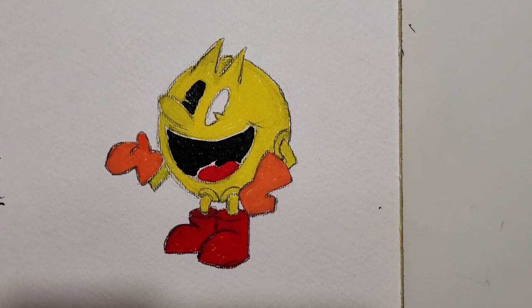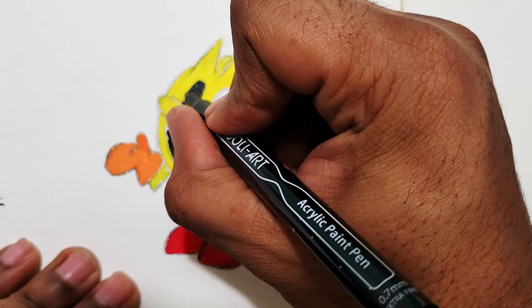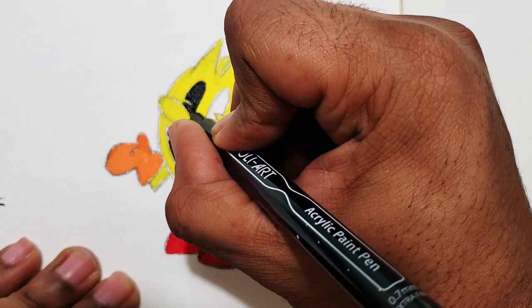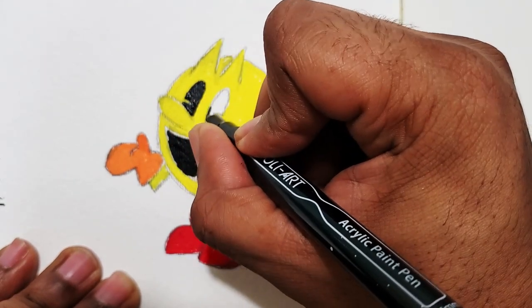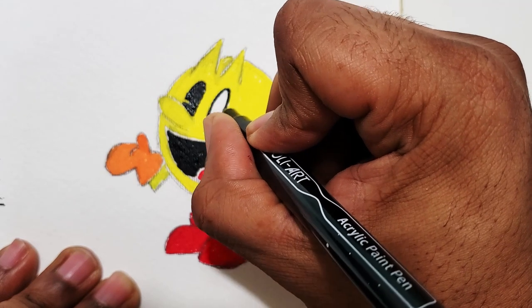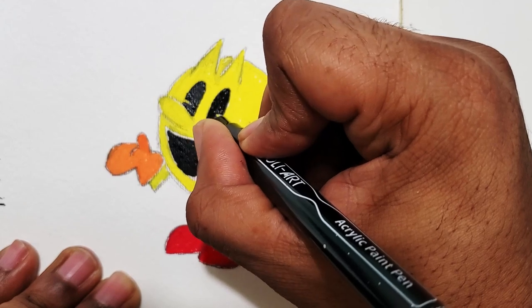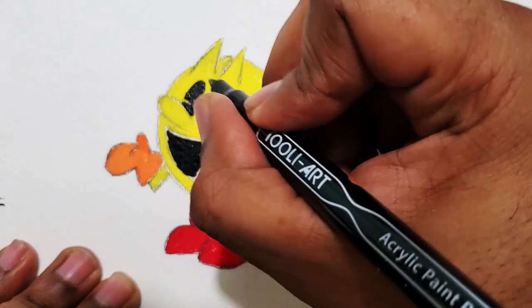Then I brought in the extra fine tip acrylic paint marker here to sharpen that up. As you see I get a lot better control because it's such a thinner spot where the ink is coming from, so I just get a lot better control out of that.